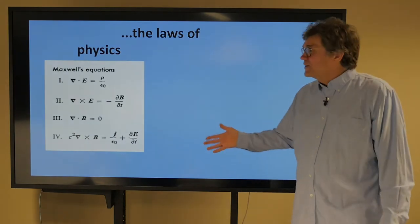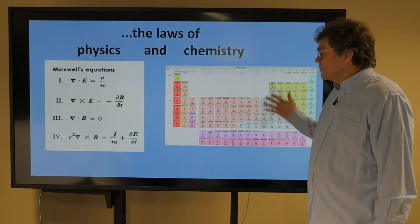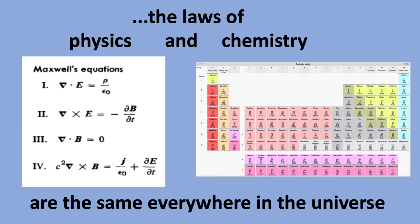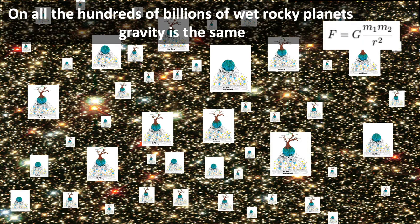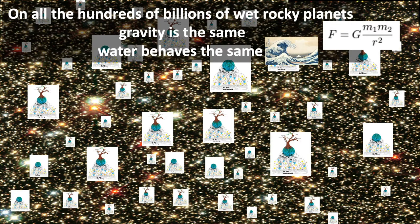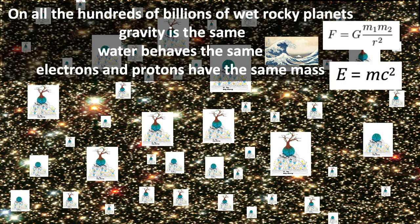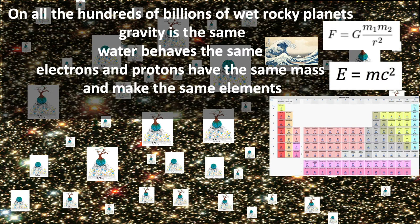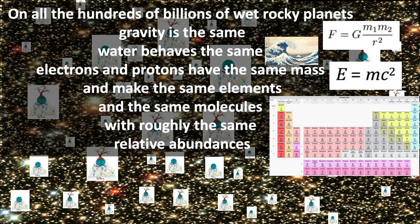Because the laws of physics, like these Maxwell equations, and the laws of chemistry, like here in this periodic table, are the same everywhere in the universe. On all the hundreds of billions of wet, rocky planets, gravity is the same. This is Newton's law. And water behaves the same way. It'll make a wave. And electrons and protons have the same mass, and make the same elements, and they combine to form the same molecules with roughly the same relative abundances. All of these things are common ingredients that we can expect elsewhere, and that provides the basis for our belief that life will start from the same beginnings.